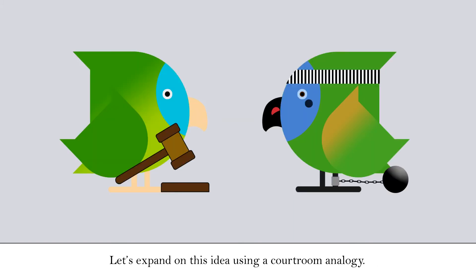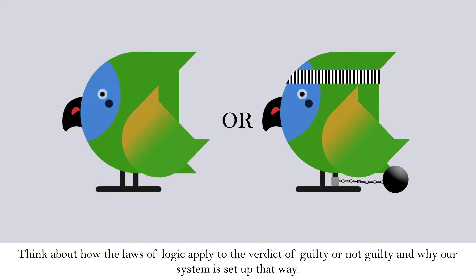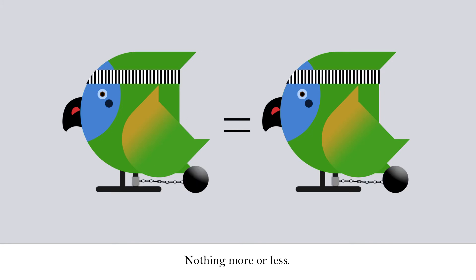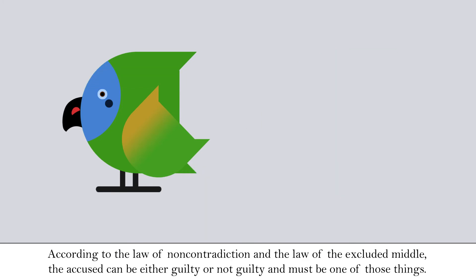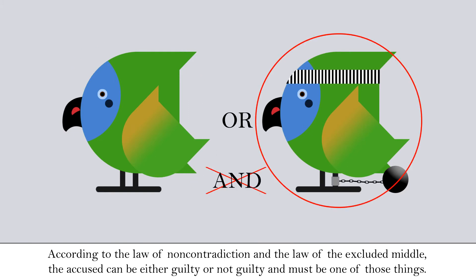Let's expand on this idea using a courtroom analogy. Think about how the laws of logic apply to the verdict of guilty or not guilty and why our system is set up that way. According to the law of identity, guilty means that it is true that the accused is responsible for a specific wrongdoing, nothing more or less. According to the law of non-contradiction and the law of the excluded middle, the accused can either be guilty or not guilty and must be one of those things.